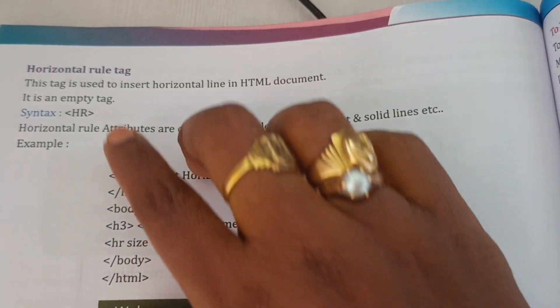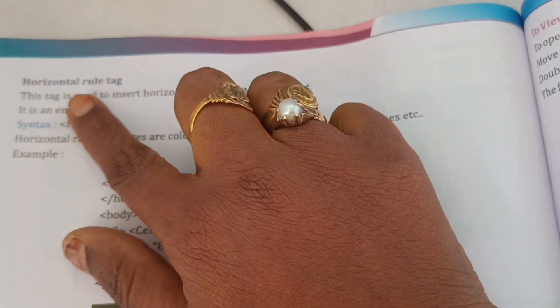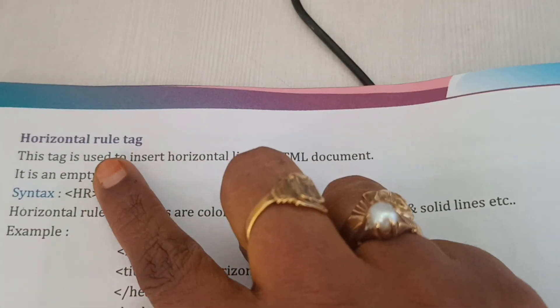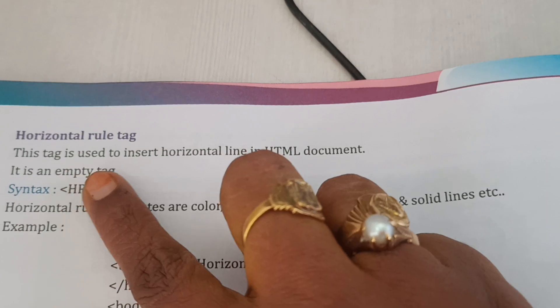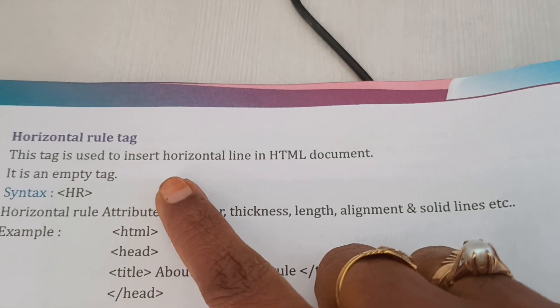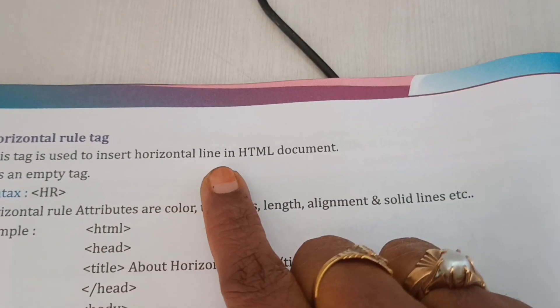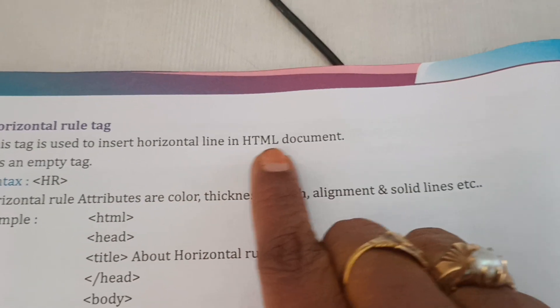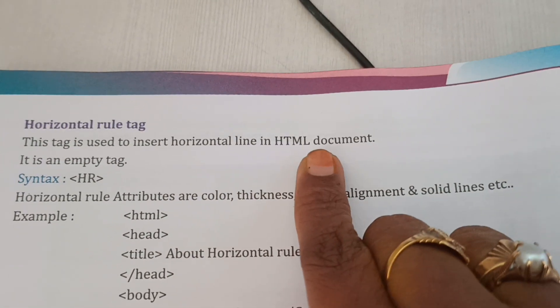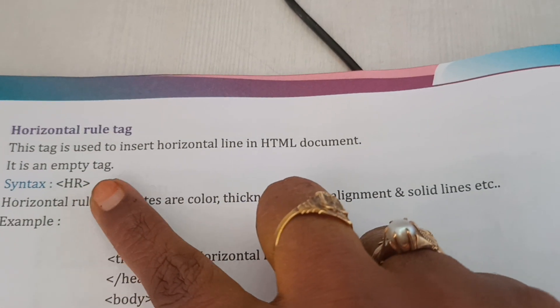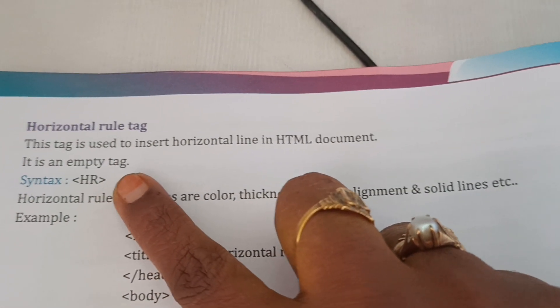Hi guys, today's topic is the horizontal rule tag. This tag is used to insert a horizontal line in an HTML document. It is an empty tag.